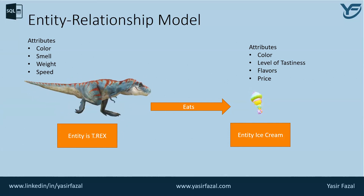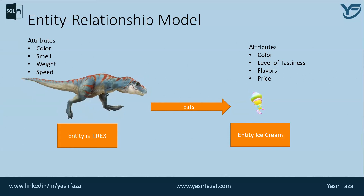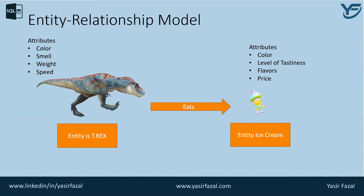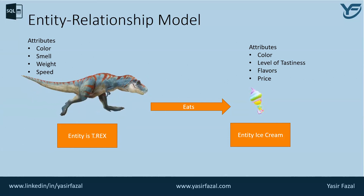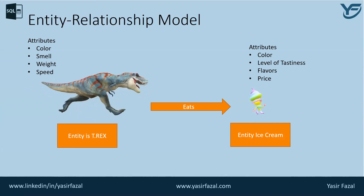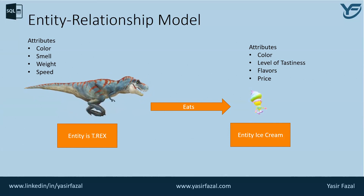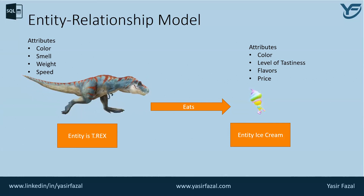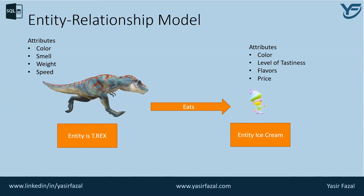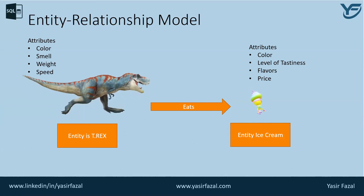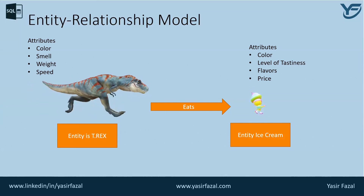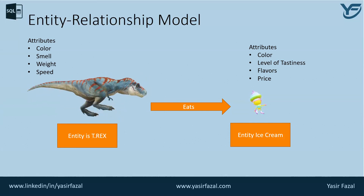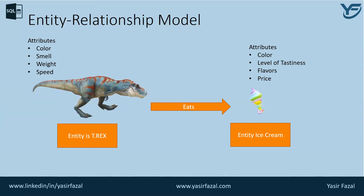There is a relationship between entities, which is the logical association among entities, normally called a relationship. Relationships are mapped with entities in various ways, and mapping cardinalities define the number of associations between two entities. There are basically four cardinalities.